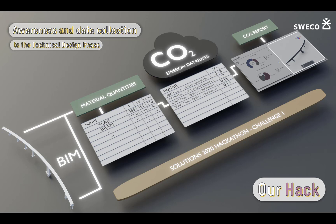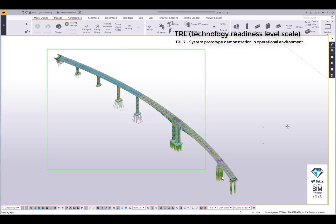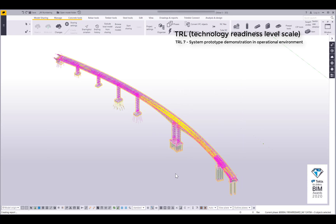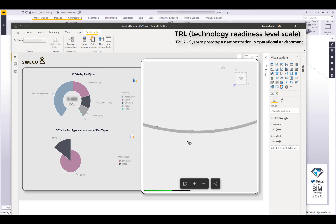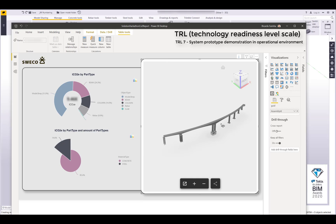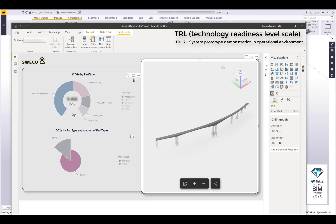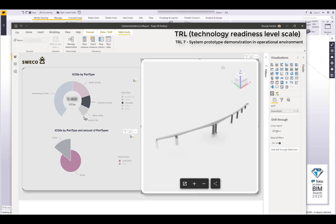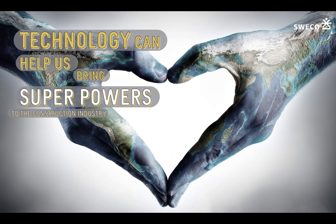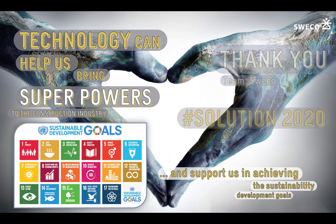This will allow us to use this data later on to help further reduce the environmental impacts of our buildings and infrastructure projects. To demonstrate the system, I'll select the entire bridge. I press the process button and get the automatic report showing the project — in this case the bridge — and the information related to the CO2 emissions. This also allows me to select different components; there's an interaction between the visual and the building information model. I can select the columns, the deck — there's a relationship between the elements and the data collected in this report. We really believe that technology can help us bring superpowers to the construction industry and support us in achieving the sustainability development goals.